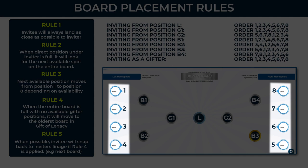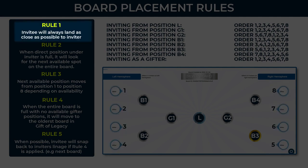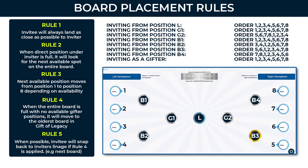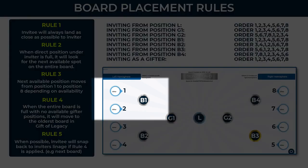This already shows you the natural flow of the board — how the board would like to populate. Rule number 1: an invitee will always land as close as possible to the inviter. If there's a position on this board and an invitee follows that position as their inviter, it will try to land as close as possible. For example, if you take position B1, the first invitee that follows B1 will go to position number 1, and the second person to follow B1 will go to position number 2.